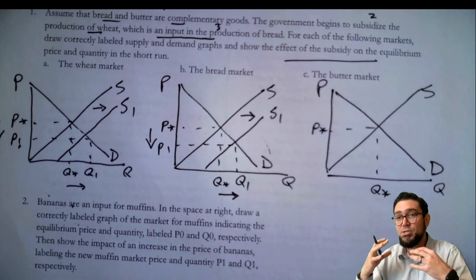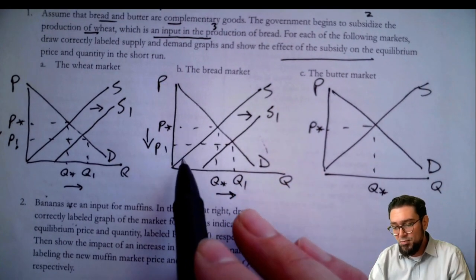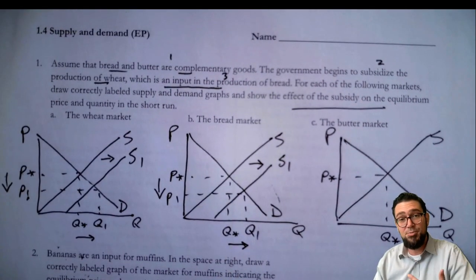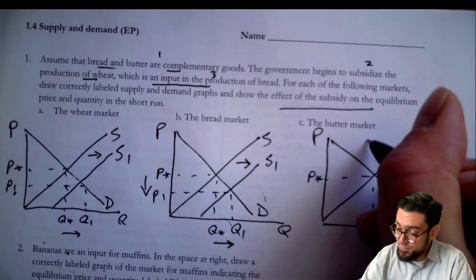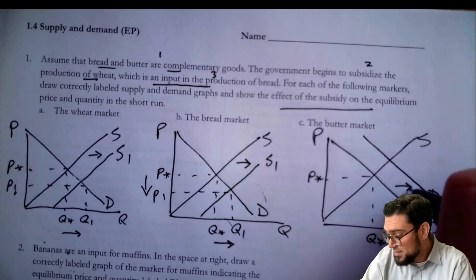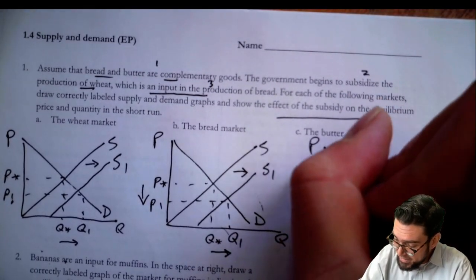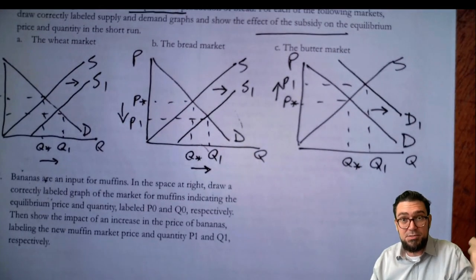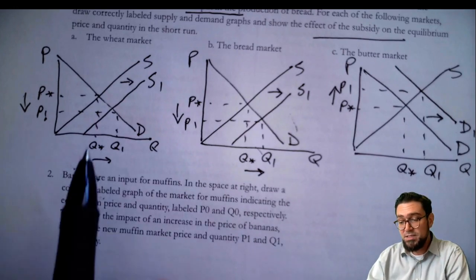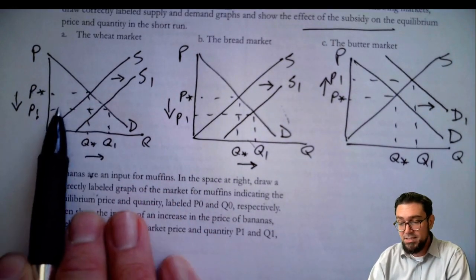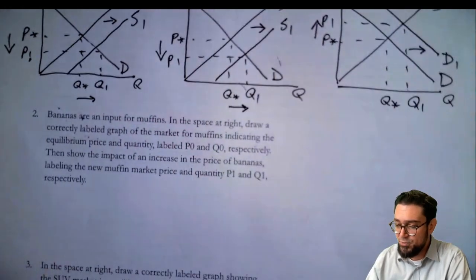Now that bread is getting cheaper, and since bread and butter are complements — two goods commonly consumed together — the consumer at home is going to say it's a little cheaper, so I'm going to buy more of the thing that goes along with it. There's more bread at a cheaper price, so there will be more demand for butter. The demand for butter is dependent on the related good of bread. The price of butter went up because there was more demand for it. These interrelated markets are useful to study — one little event of a subsidy in wheat caused more demand for butter.